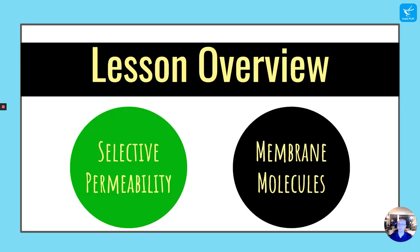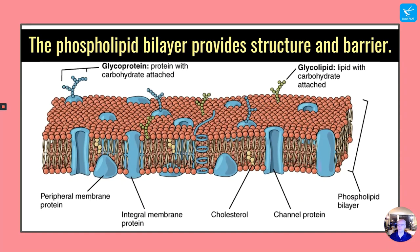So first, let's mention selective permeability. The phospholipid bilayer provides structure and barrier to the cell membrane. As you can see here, we have a general schematic of the cell membrane.